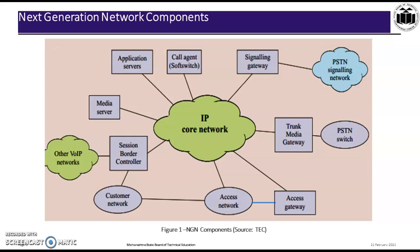The Access Gateway provides functions such as media conversion from circuit to packet and packet to circuit, as well as echo control. The Access Network provides the connectivity between the customer premises equipment and the access gateways in the service provider network.